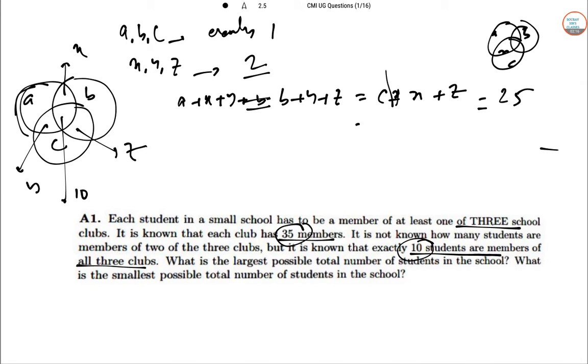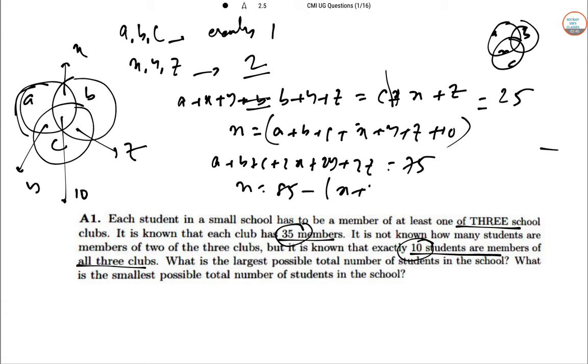So you want to find the maximum and minimum number of values of N. That is A plus B plus C plus X plus Y plus Z plus 10. So adding the three constraints we get that A plus B plus C plus 2X plus 2Y plus 2Z equal to 75 we can get.